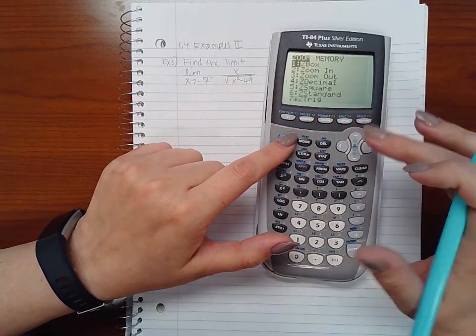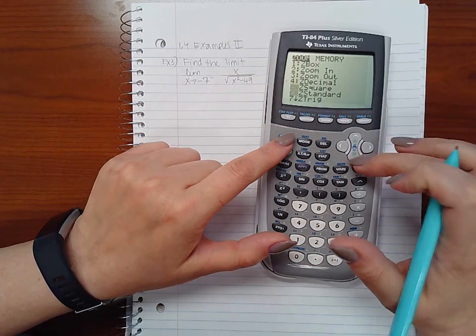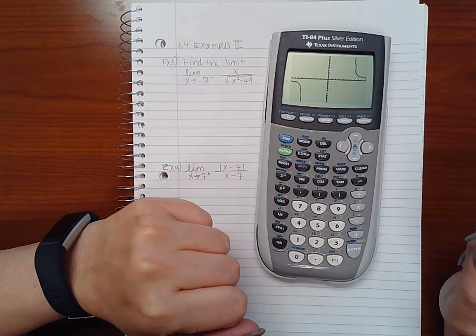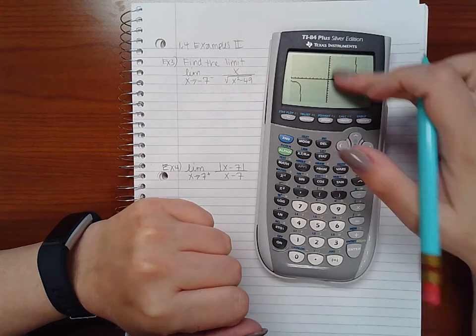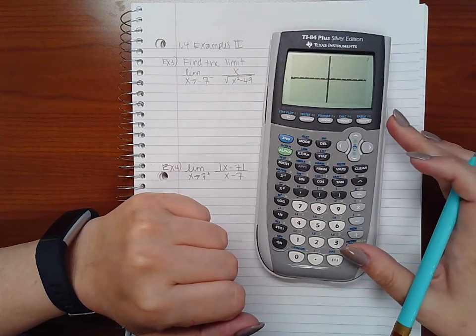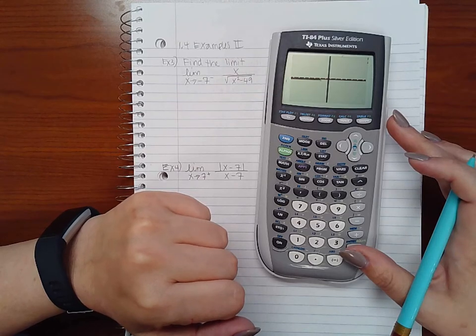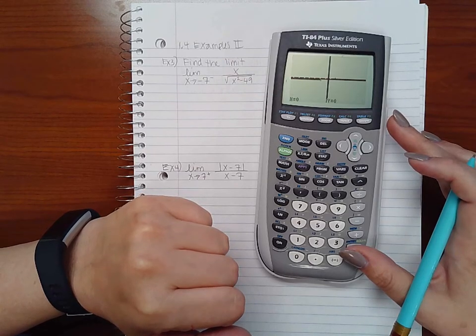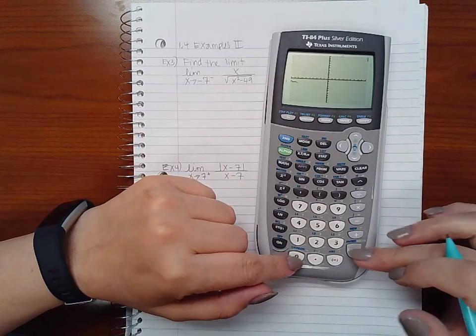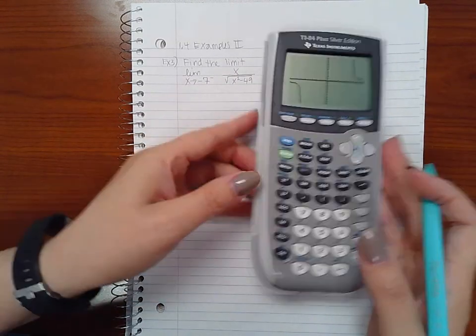Well I'm graphing it on a really weird table so let me fix that. Zoom standard, here we go. Now I can't see what's going on in the middle so I'm going to zoom out and see if it will let me see. Nope, there's nothing going on in the middle.